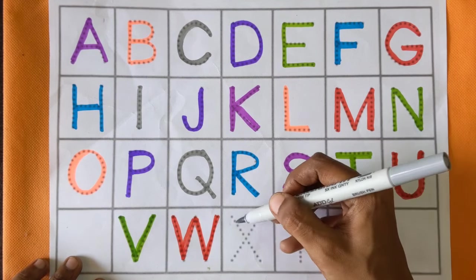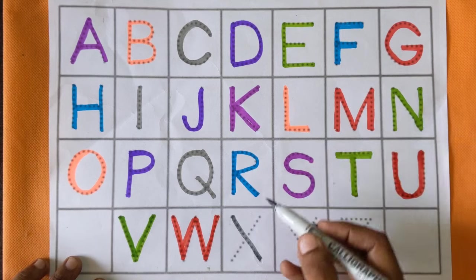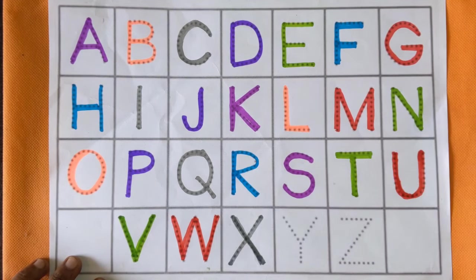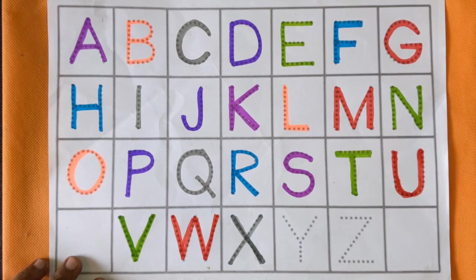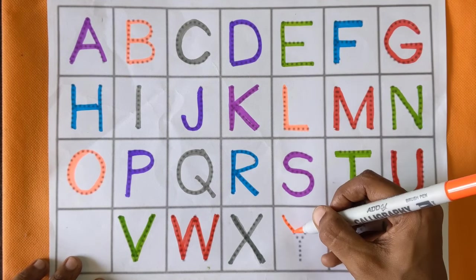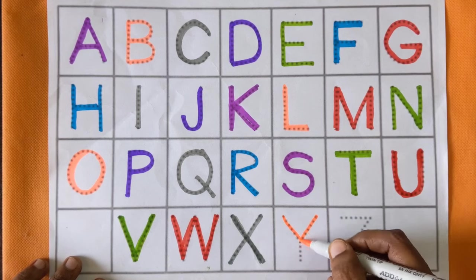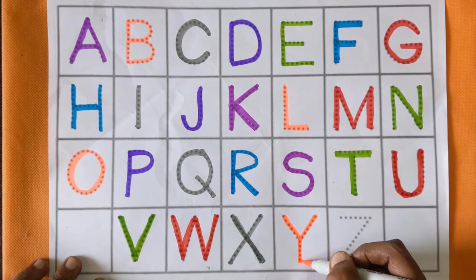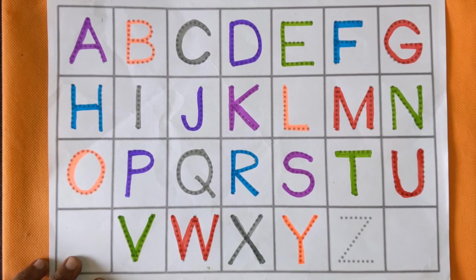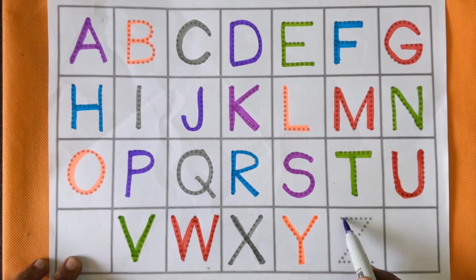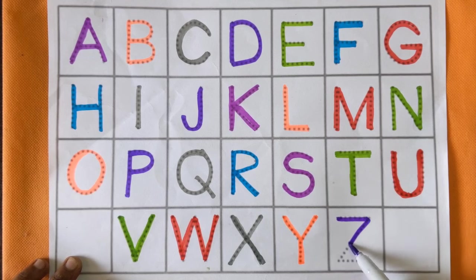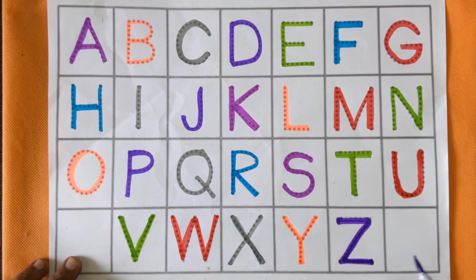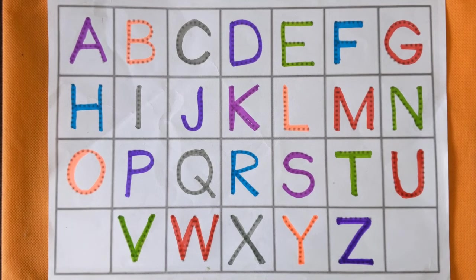Next is X. X for x-ray machine and X for exit, gray color. Y. Y for young and Y for yo-yo, orange color. After Y, next is Z. Z for zoo and Z for zebra, violet color.